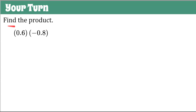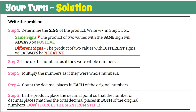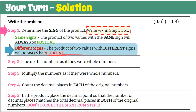Now it's your turn. Find the product of 6 tenths multiplied by negative 8 tenths. Go over to the graphic organizer, pause the video, go through the five steps, and then come back to see my work. Good luck. Welcome back. Step one: determine the sign of the product. We have positive and negative — different signs — and the product of two values with different signs is always negative. So put a big negative sign in the step five box. If you're answering on a computer, put that negative sign in the answer box right at the start so you can't forget it.